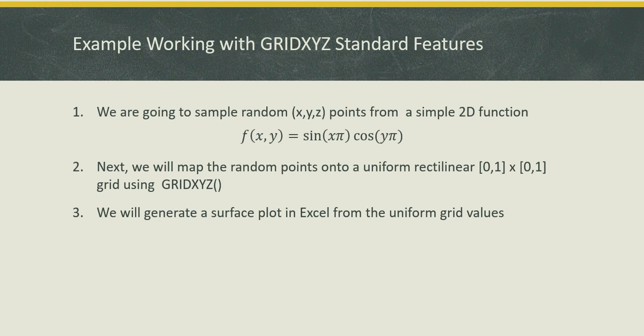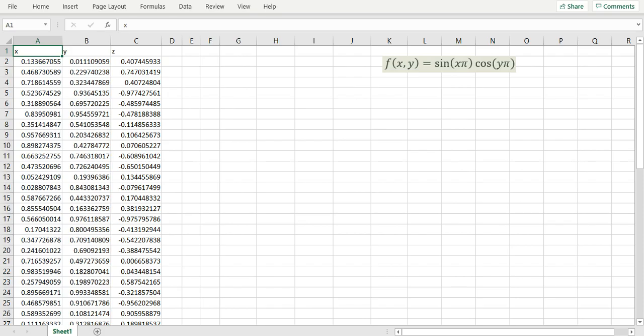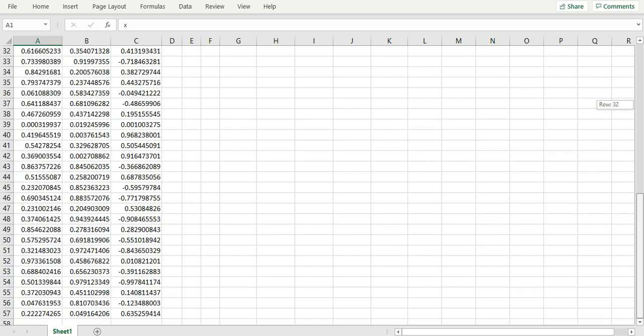However, in Google Sheets there are no surface plot utilities. The surface plot utilities are only available in Excel. I've started my Excel here and to save some time I've already sampled about 50 plus points from the function sine pi x times cosine pi y. The points are arranged as three columns in A, B, and C as shown in Excel.